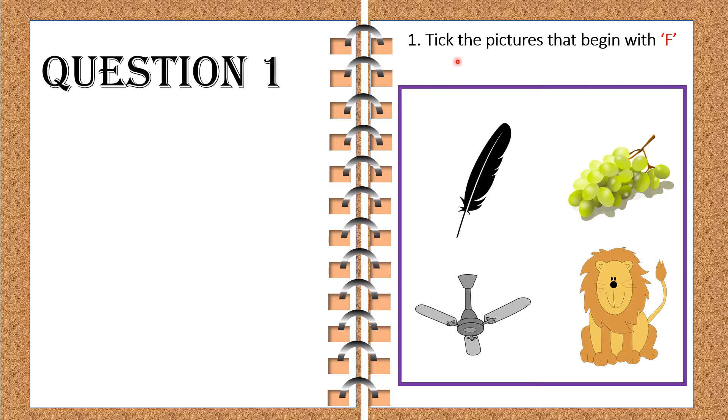Our first question says, tick the pictures that begin with the letter F. For simplicity, let me tell you these pictures: feather, grapes, lion and fan. I am sure you all must have ticked the correct pictures. Let's check the answer. The correct answer is feather and fan. That's absolutely right. I am sure you must have got a star. That's great. Let's move on to next question.